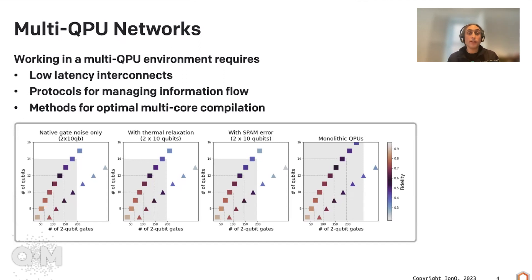We also need methods for multi-core compilation because at the end of the day, when we want to distribute the task, we want to use the interconnects as little as possible. We don't want to move information around too much. And we know that all of these things exist and are being developed for classical computers. When you want to have a supercomputer, you need low latency interconnects, you need protocols to manage information flow, and you need methods for compilation.